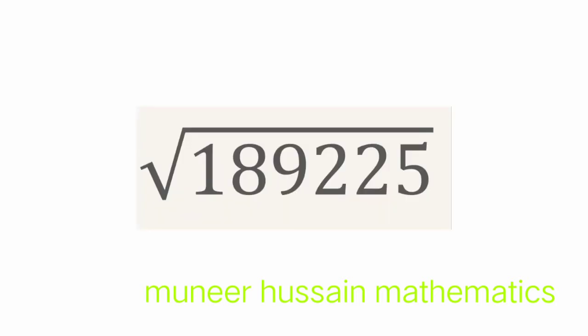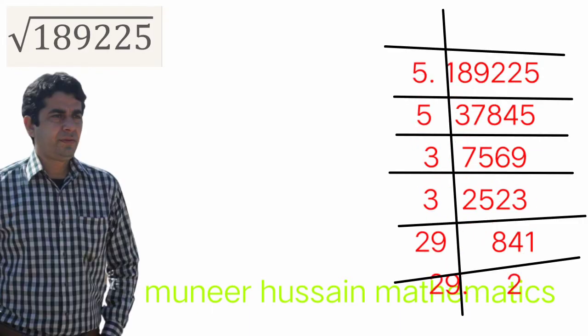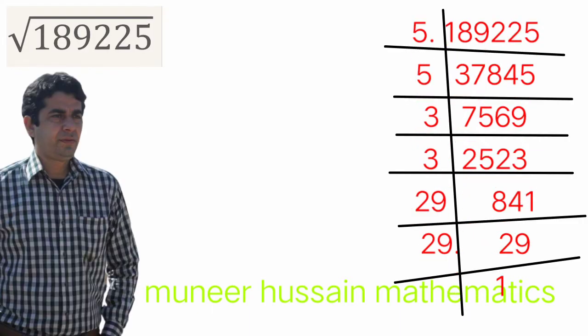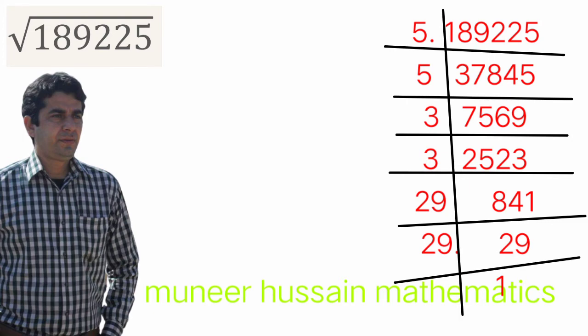Now we shall go to the next question: square root of 189225. The unit digit is 5, so it is divisible by 5. Dividing 189225 by 5: working through the long division gives 37845. The unit digit of 37845 is also 5, so it must again be divisible by 5. In a square root, a prime factor always appears at least twice.